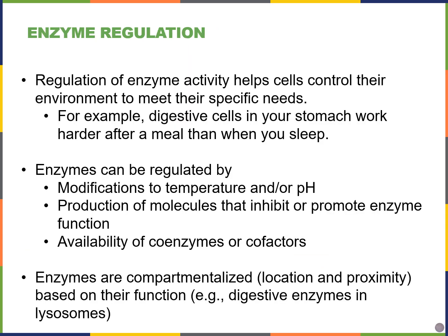How do we regulate enzymes if their purpose is to speed up reactions? Maybe I don't want the reaction happening at some moment in time. Our book gives us an example of digestive cells — the enzymes in our stomach work harder after a meal than when we sleep. How do we make sure we're not actively digesting if there's no food to digest? We can regulate our enzymes in many ways, one example being through changing the temperature or pH of the environment.